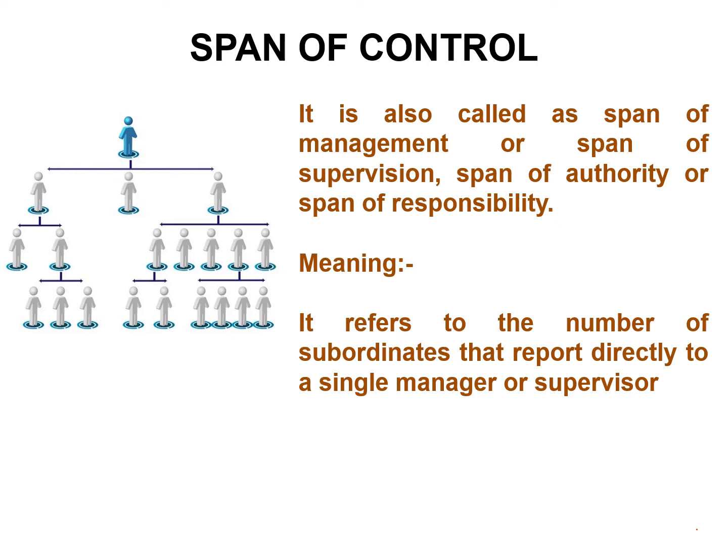It involves different levels of management. For example, a sales manager who is responsible to manage and control the activities of 12 salespeople. In this example, the span of control is 12.